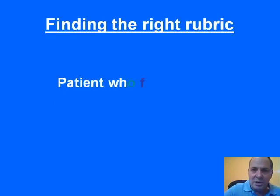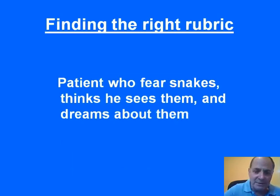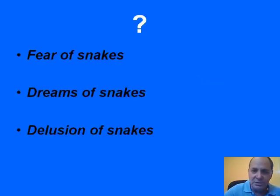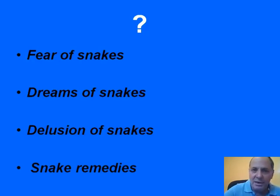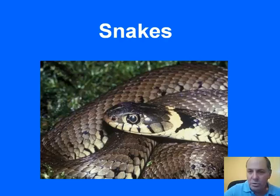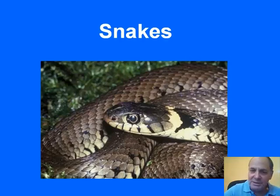Now let's take another example. A patient who fears snakes, thinks that he sees snakes, and dreams about snakes. What will we take? Fear of snakes? Dreams of snakes? Delusions of snakes? What about all the snake remedies themselves? Instead, I created one big rubric called Snakes that contains anything to do with snakes, including the snake remedies, and even in a very low experimental degree, plant remedies that relate to snakes or have snake in their name.